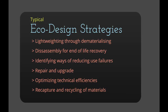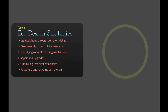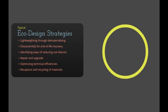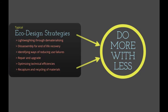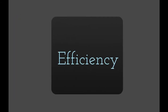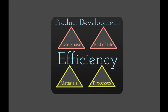Whilst there are a variety of eco design strategies, the principle is really simple: we do more with less. It's about being efficient in not only the materials and the processes required to produce a product, but in the way in which the product operates in its use phase and how it's managed at the end of its life.